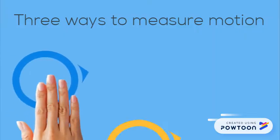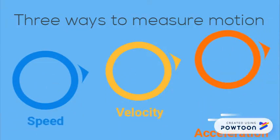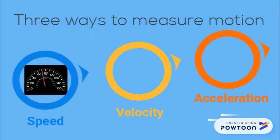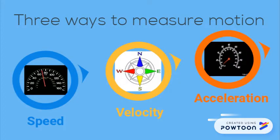There are three ways to measure motion: speed, velocity, and acceleration. You can measure speed with a speedometer, but to measure velocity, you need a speedometer and a compass. To measure acceleration, you need a moving speedometer needle or compass needle.